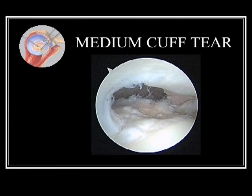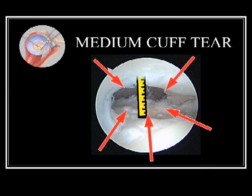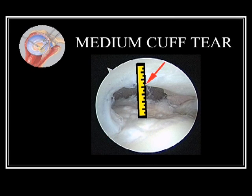In this moderate-sized rotator cuff tear, the entire tendon has torn from its attachment on the shoulder, but only retracted or pulled away barely a centimeter. In general, moderate-sized cuff tears are characterized by minimal retraction, leaving the remaining tendon very close to normal length.